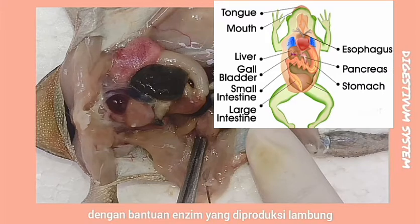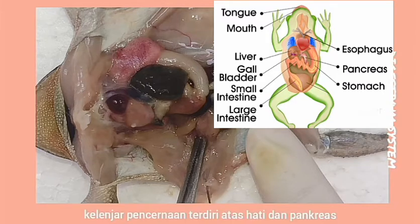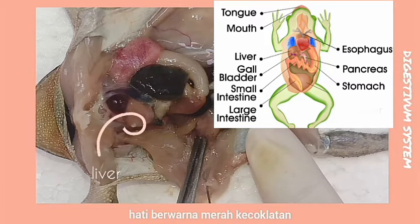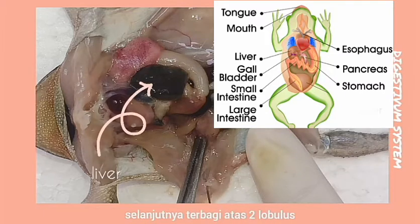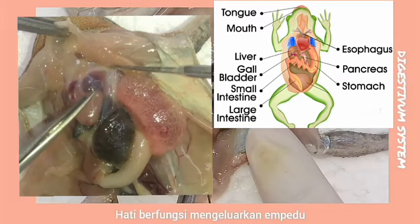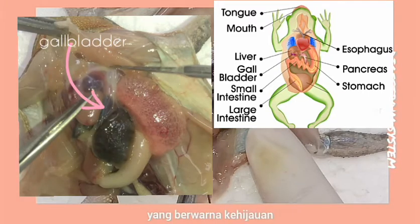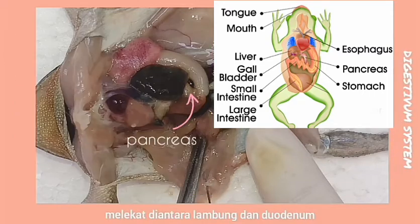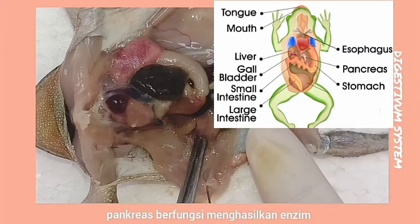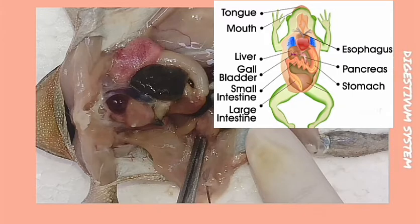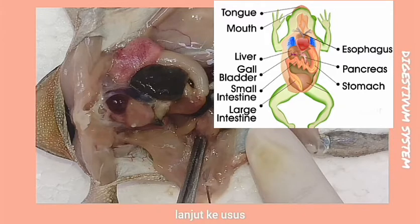The stomach widens when filled with food. The stomach wall squeezes the food until it is easily broken down with the help of enzymes produced by the stomach. The digestive glands consist of the liver and pancreas. The liver is composed of the right lobe, further divided into two lobes, and its function is to produce bile, which is stored in the gallbladder and is green in color.